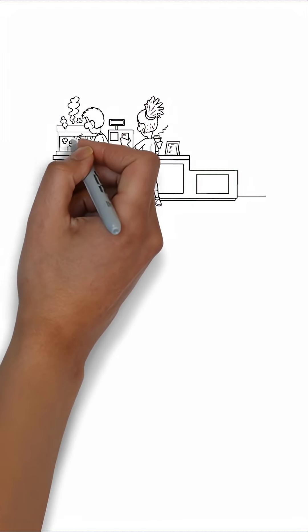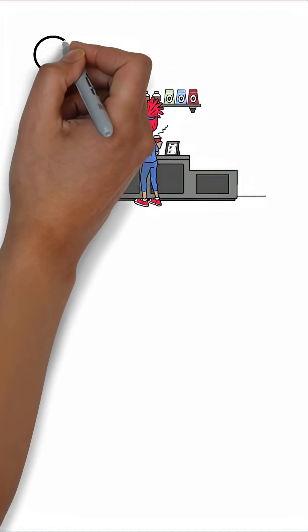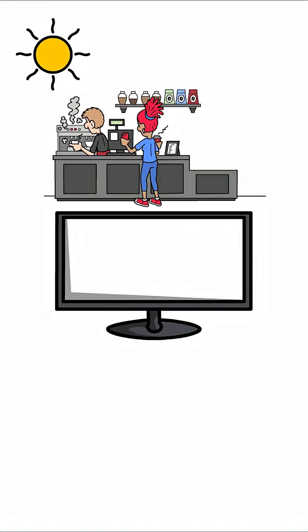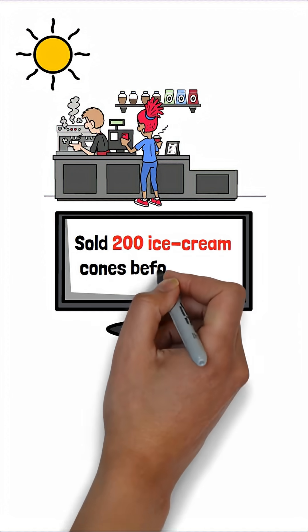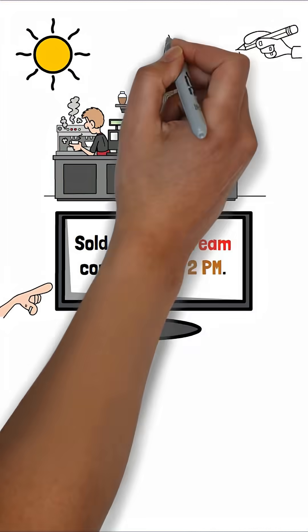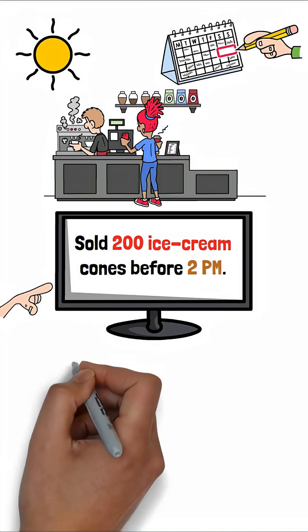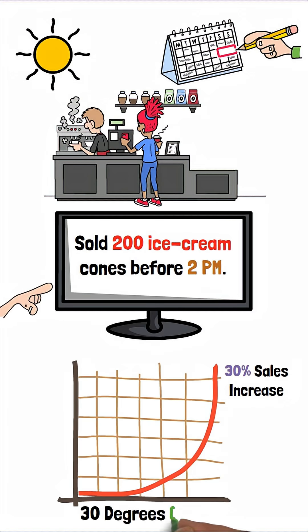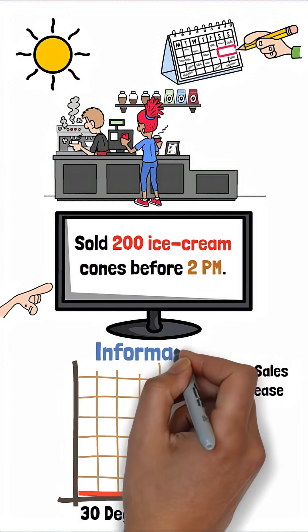Imagine you're running an ice cream shop on a hot Saturday afternoon. Your point of sales system shows you sold 200 ice cream cones before 2pm. That's data.